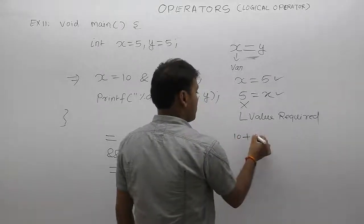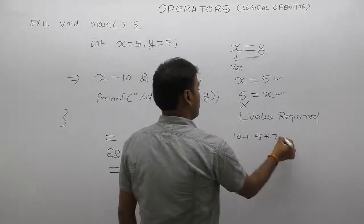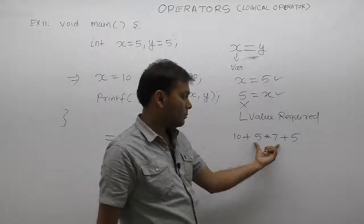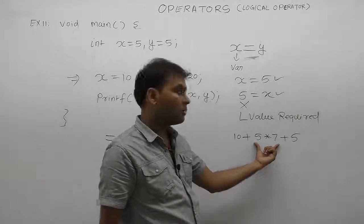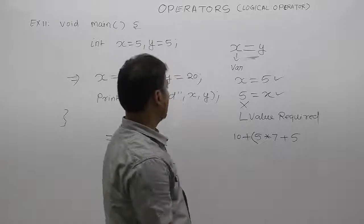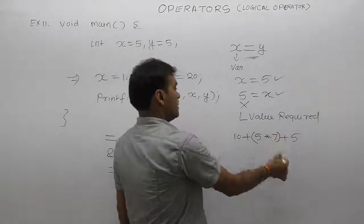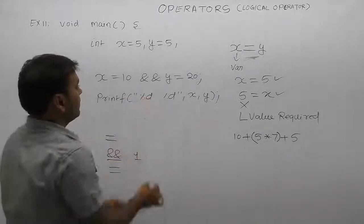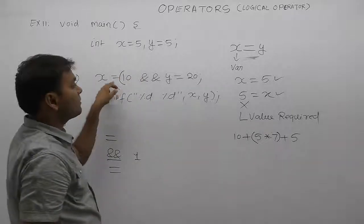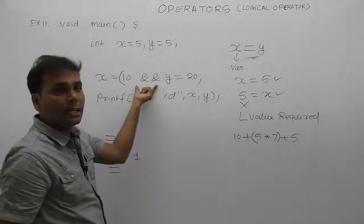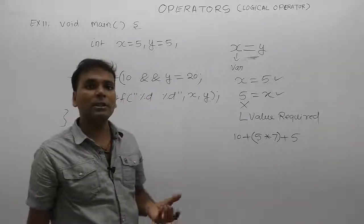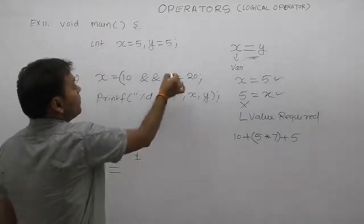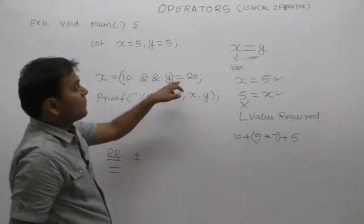For example, consider: 10 plus 5 multiply by c1 plus 5 — the highest priority is multiplication. The first operand for multiplication is 5, the second operand is 7. Similarly, what has the highest priority here is AND. The first operand for AND is only 10, because assignment will get the least priority. The operand part is considered up to the least priority operator. The second operand for AND is only y, because assignment has the least priority.